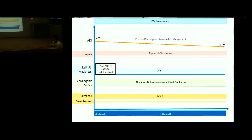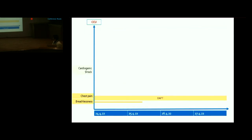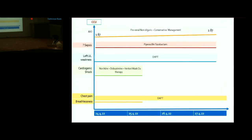AKI creatinine 2 was pre-renal, non-oliguric, managed conservatively, and improved to 1.67 within two days. The patient was shifted to CCU on 24th April. PCI with proximal LAD stent was performed on 25th April. Blood pressure improved to 110/70 on 25th April; inotropes were tapered and stopped before PCI, with neuro clearance obtained.